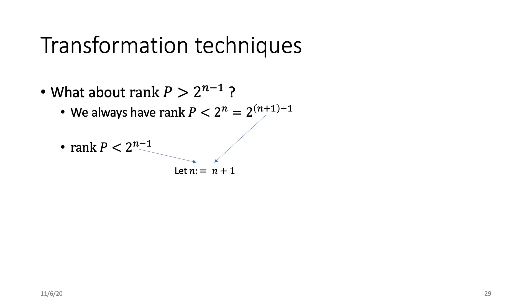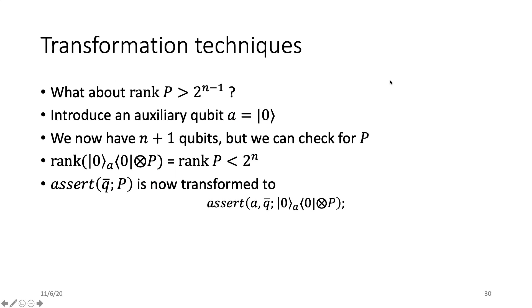if we can convert n to n+1 without changing the rank of P, the problem is solved. So we introduce an auxiliary qubit. We first initialize it to be |0⟩. Now we have n+1 qubits, and then we can check for a new projection, |0⟩ state tensor P. The rank is not changed and should be smaller than 2^n. Then the assertion is transformed to a new assertion on the auxiliary qubit and the original qubit set q̄.